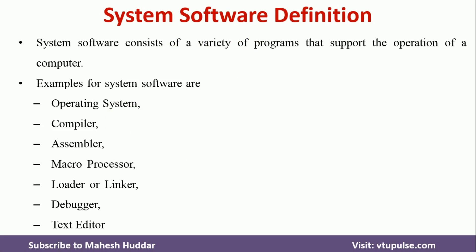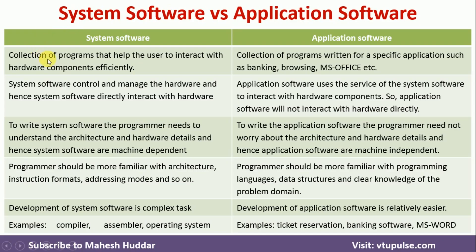Now we will see the difference between system software and application software. System software is a collection of programs that helps users to interact with hardware components efficiently. Application software is a collection of programs written for a specific application — for example, a banking application, browsing, different browsers, or MS Office. System software controls and manages the hardware and directly interacts with it, whereas application software uses the services of system software to interact with the hardware components.